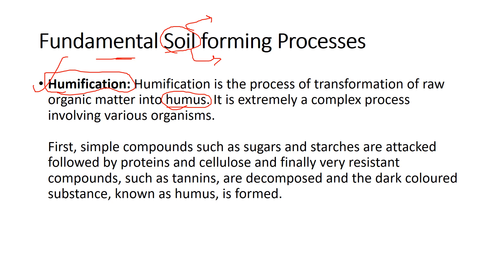In simple terms, humification is the transformation of raw organic matter into humus. Organic matter includes all plants and animals that have the tendency to decompose — leftover vegetables, garden wastage, litter, dead insects, or even dead animals. Everything falls under organic matter. This organic matter decomposes and is finally converted into humus. It is an extremely complex structure involving microorganisms, endothermic and exothermic reactions, and many micro-processes.